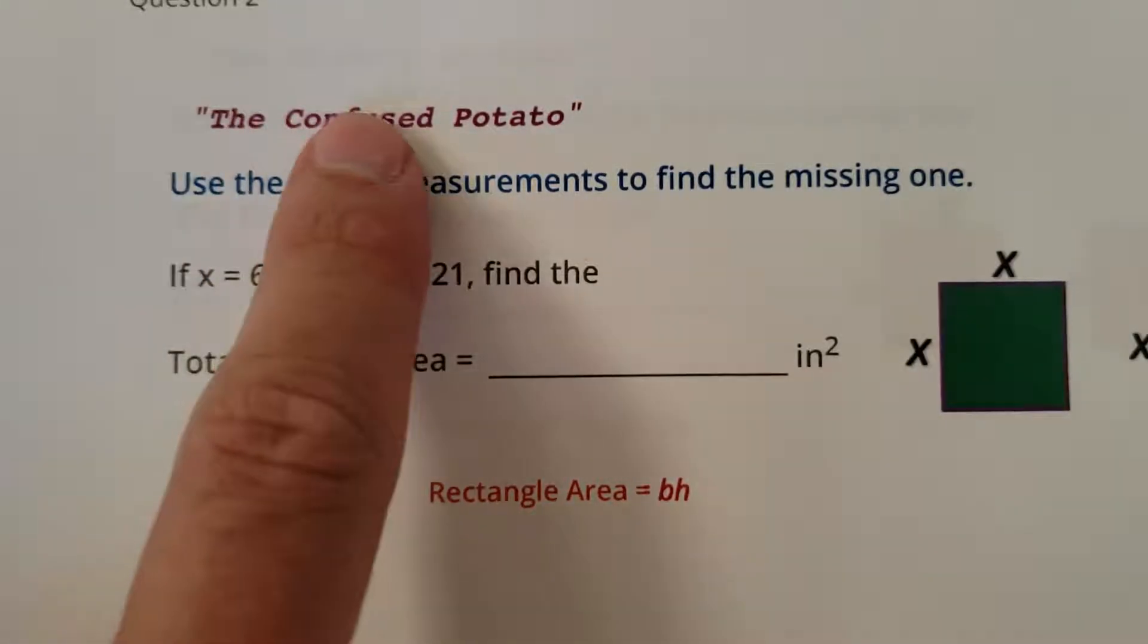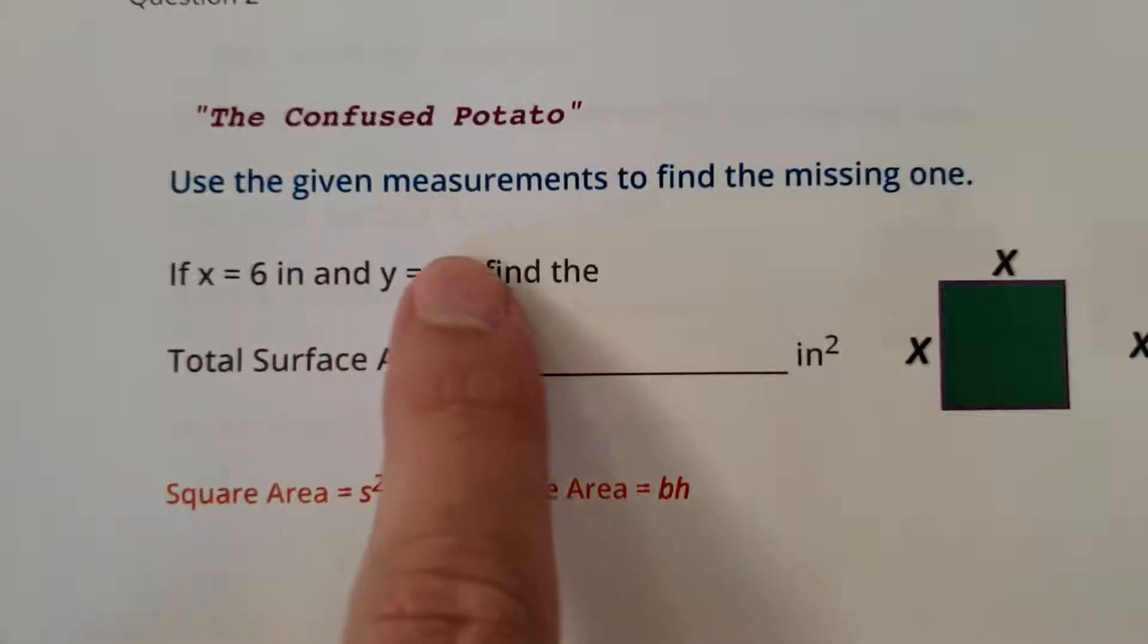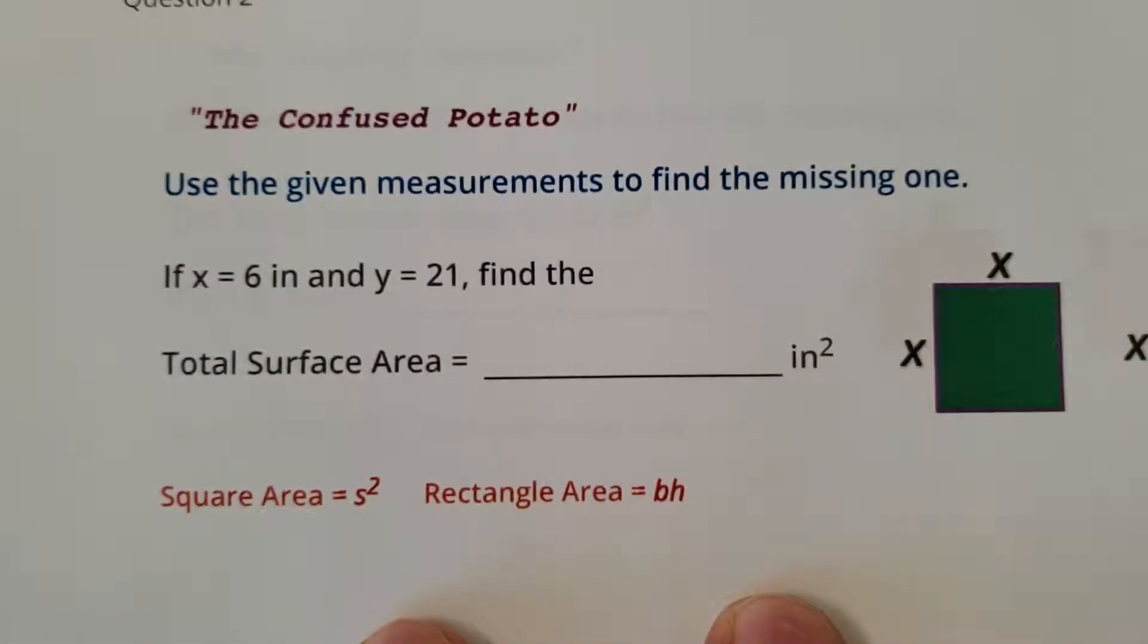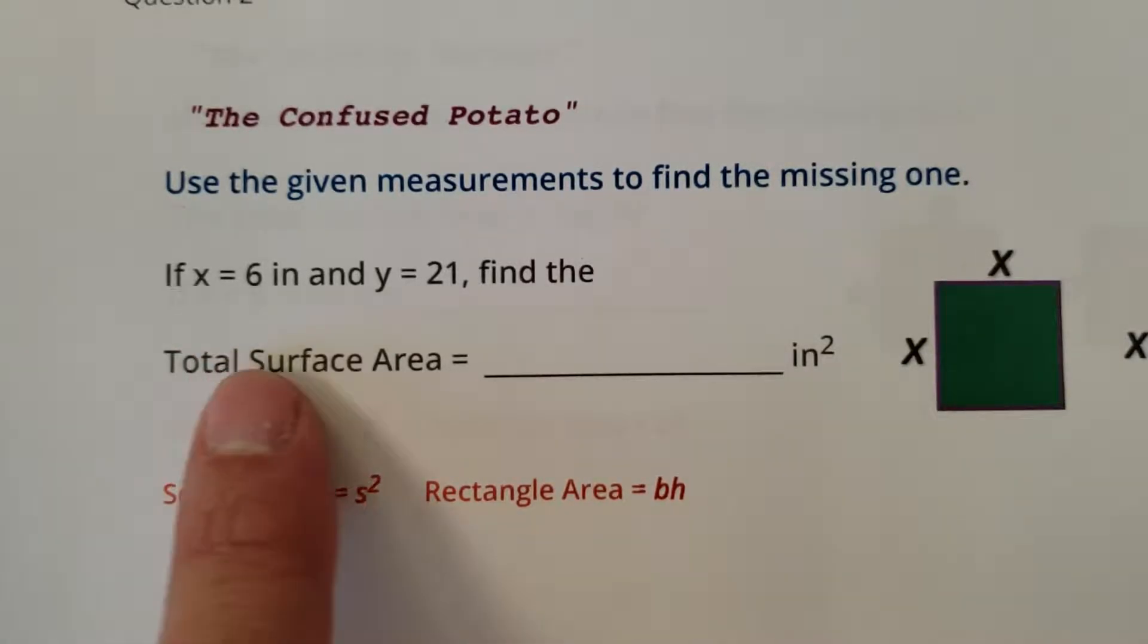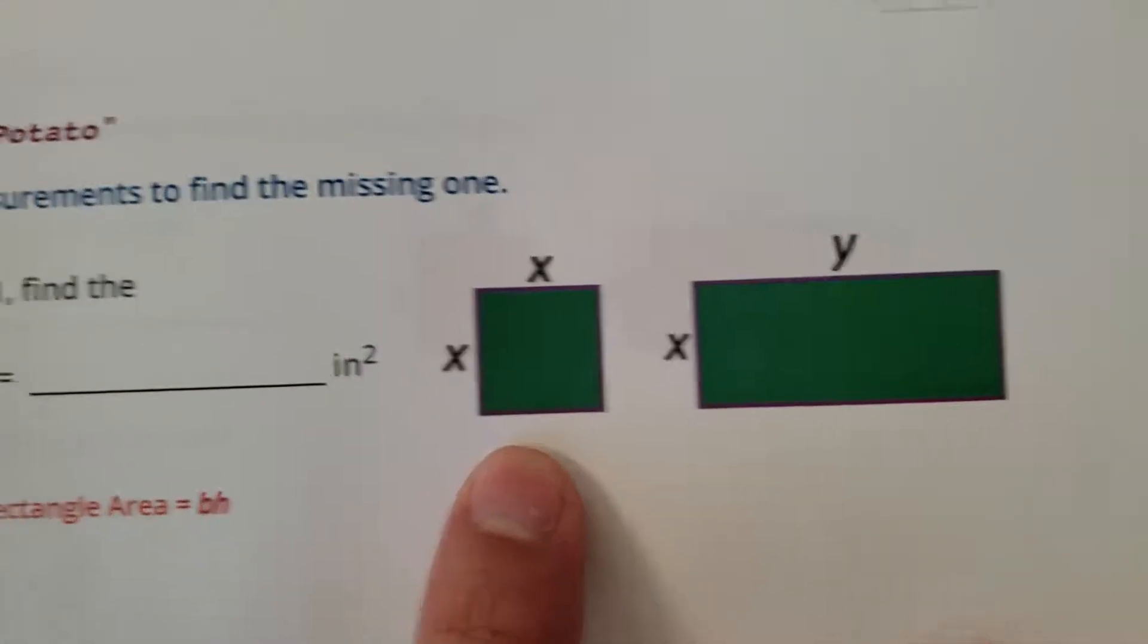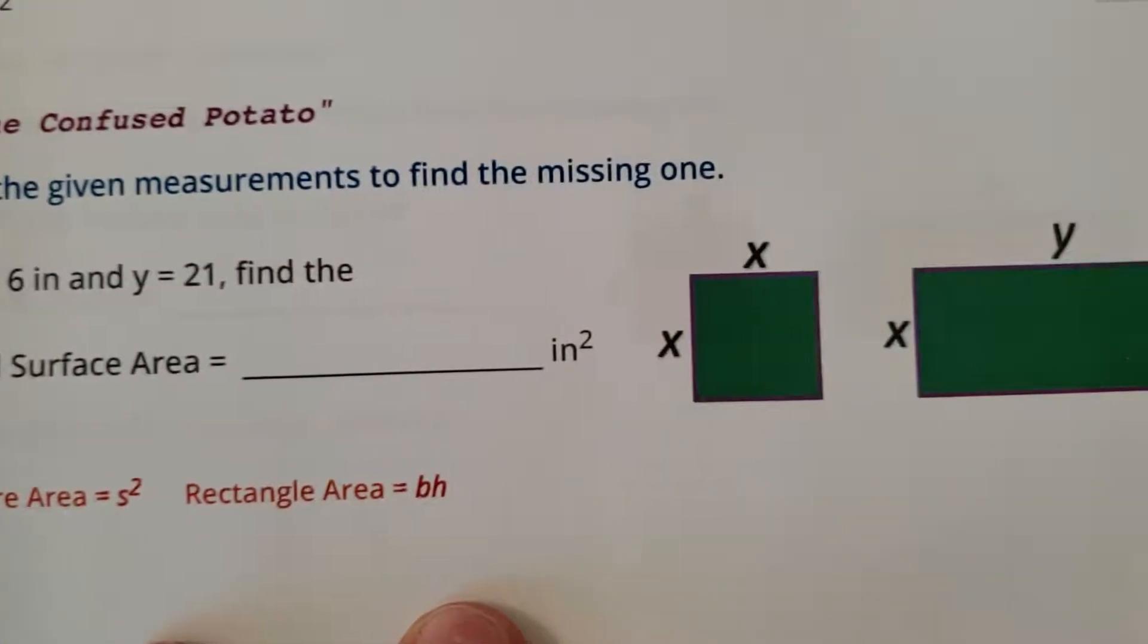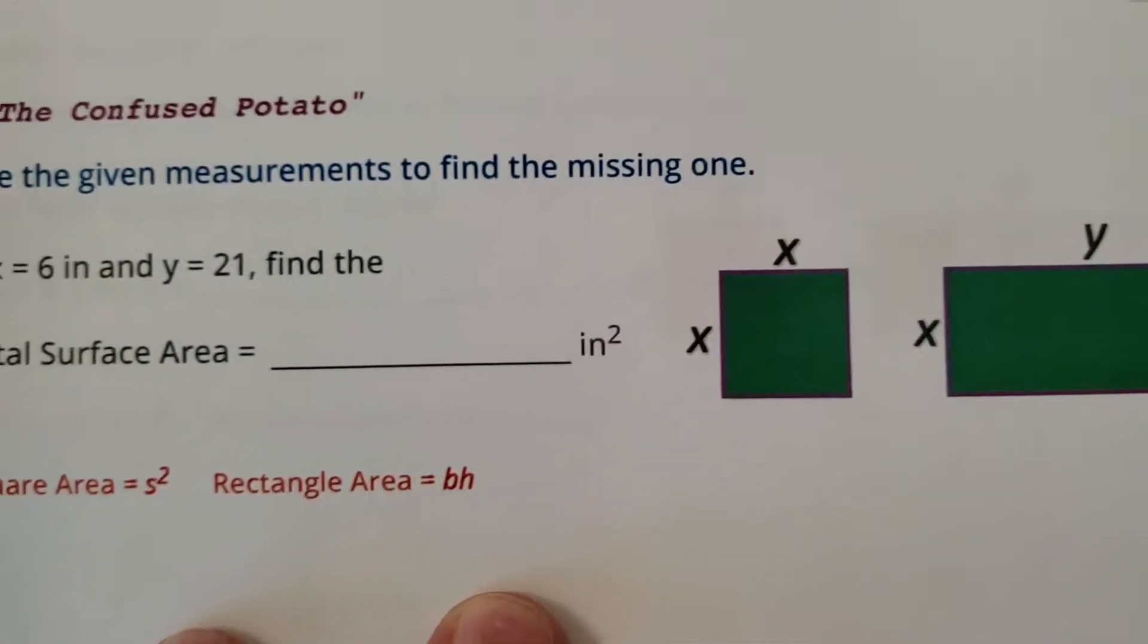All right, let's work on the confused potato. Use the given measurements to find the missing one. Okay, pretty general descriptions here. So we have a square, we have a rectangle, and I give you the length of X and the length of Y. So here's what I would do. Again, the best practice is to do this stuff on paper, and there's also some reminders of some basic formulas.